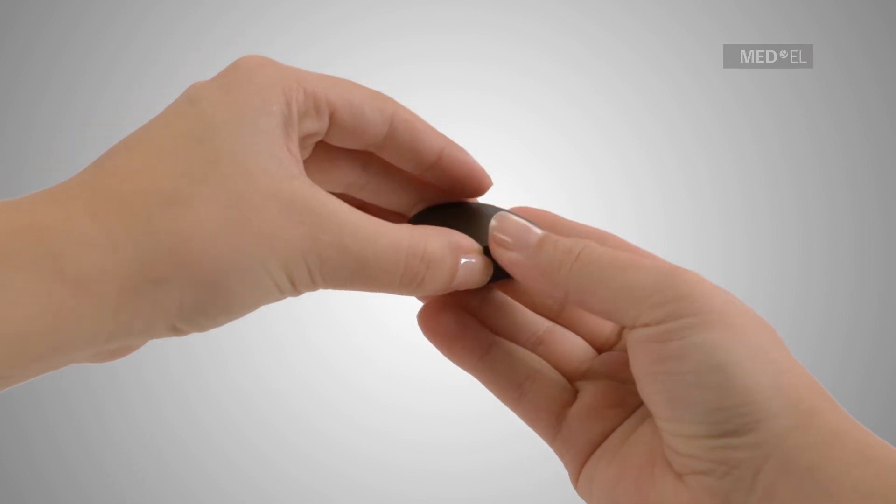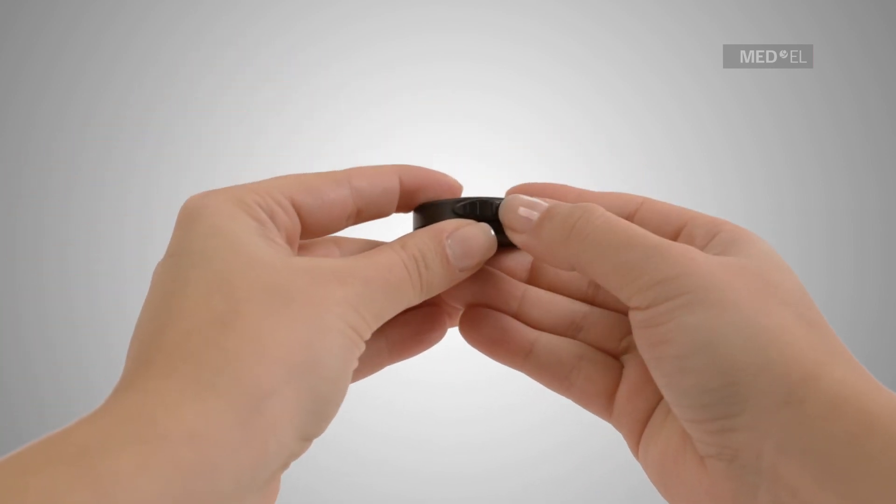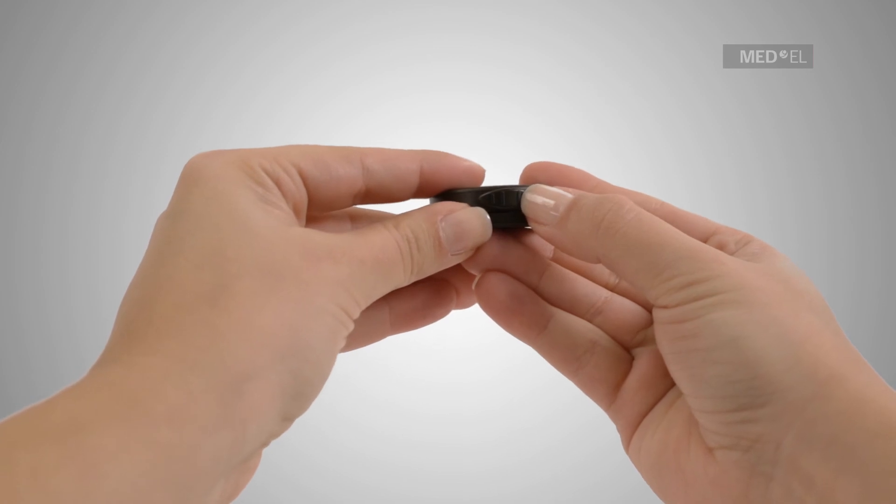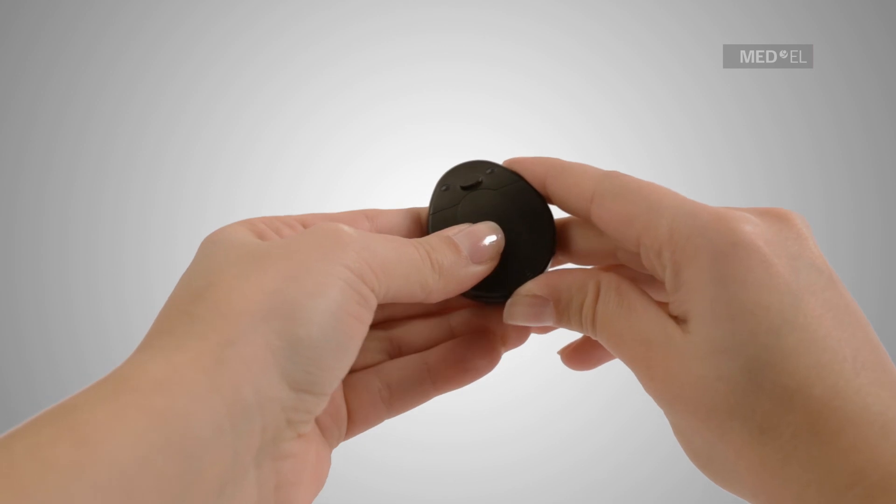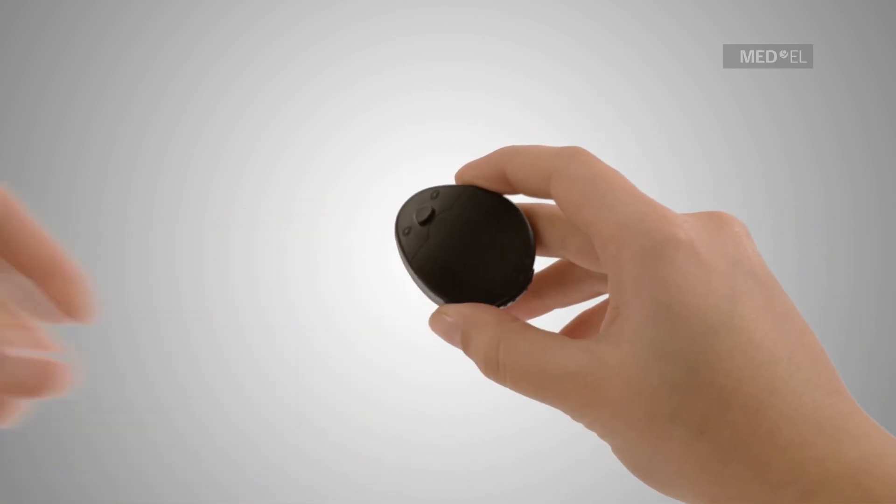The battery pack should come in at a slight angle against the backside of the control unit before being gently pressed towards the control unit. Once at rest, move the switch toward the left to lock.